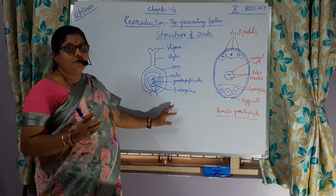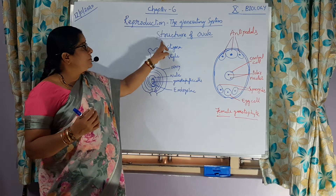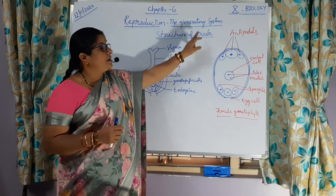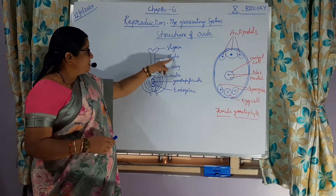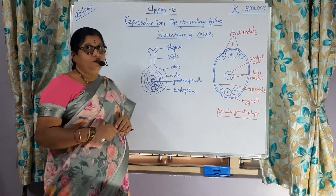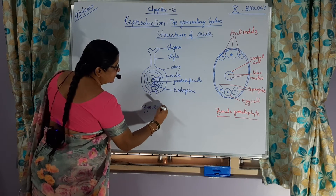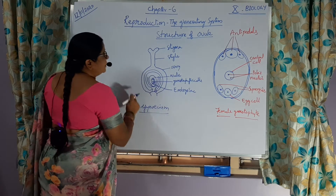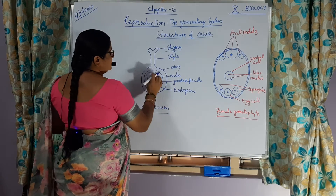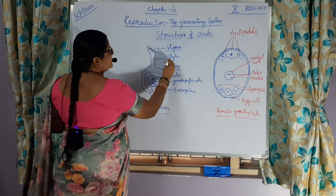To understand the process of pollination and fertilization, we have to know the female reproductive part of the plant flower — that is the structure of the ovule. This is the structure of gynoecium. Gynoecium contains three important parts: stigma, ovary, and this long tube-like structure — style.